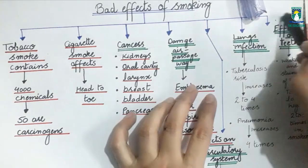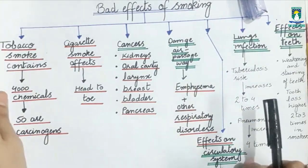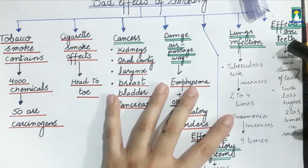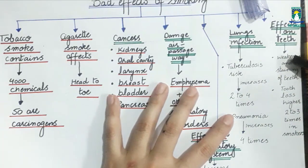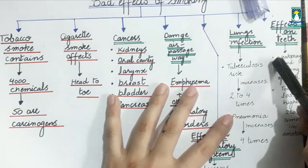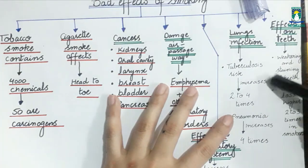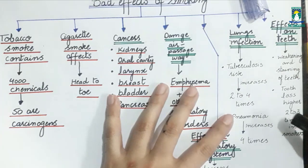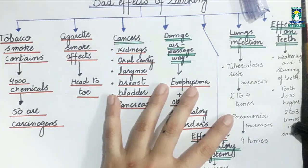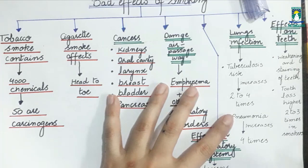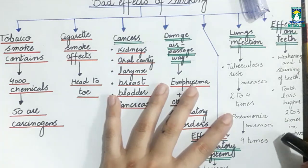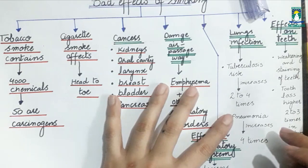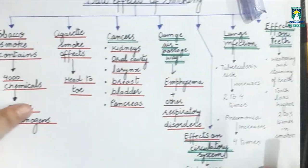Now we will discuss the effects of smoking on teeth. Smoking is also responsible for weakening and staining the teeth. Teeth become weak and develop stains due to smoking. Tooth loss is two to three times higher in smokers than in non-smokers.